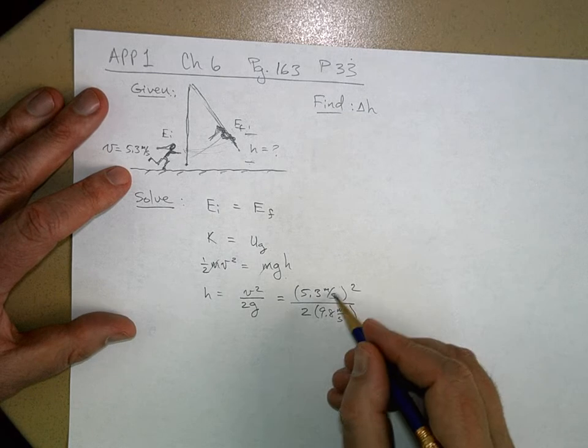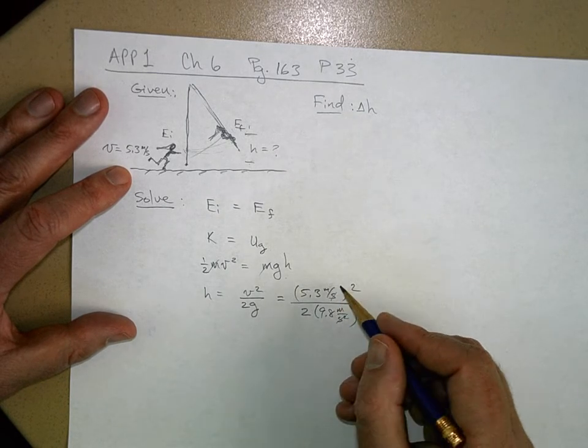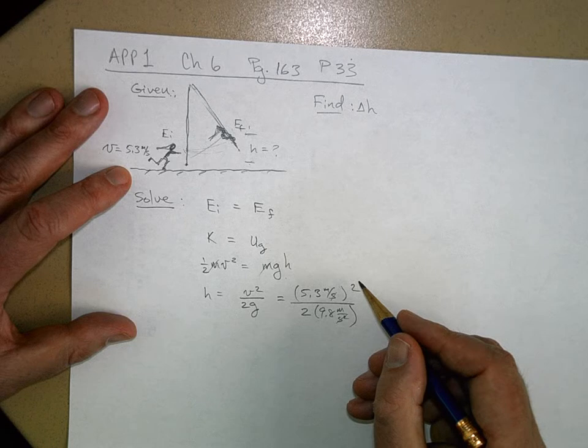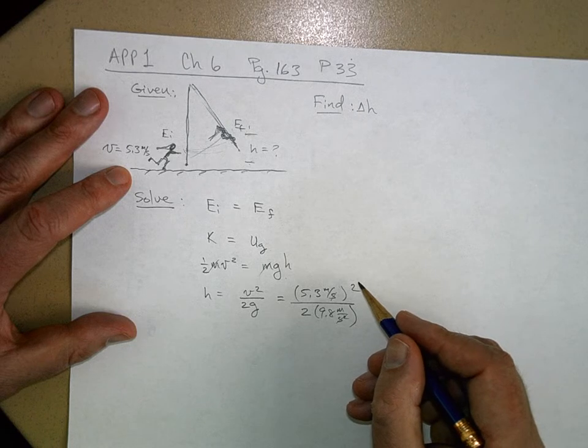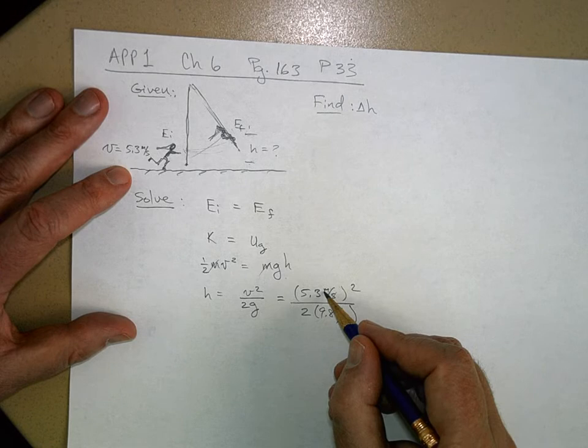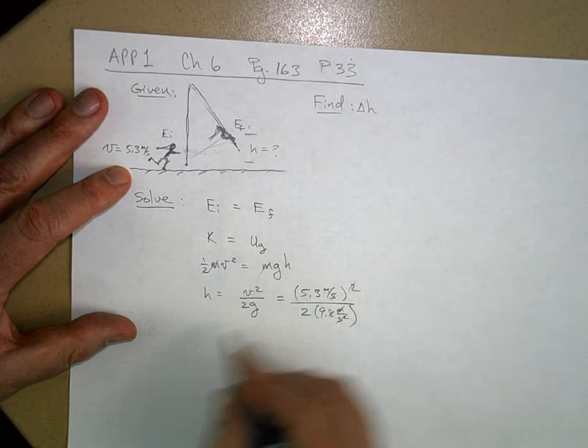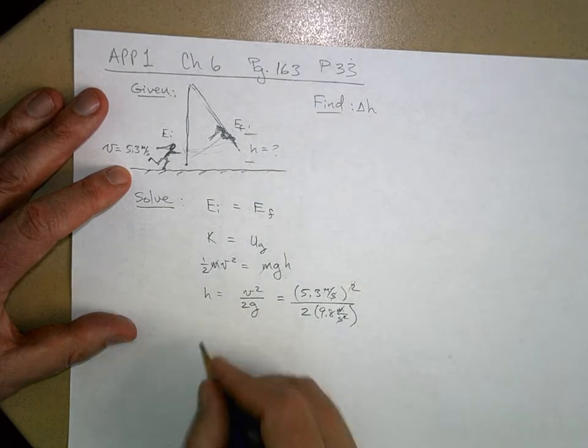5.3 meters per second squared over 2 times 9.8 meters per second squared. And notice the second squared cancels. Something isn't going to cancel. You're going to have a meter squared on the top here, but you only have a meters there on the bottom, so that's going to cancel. So anyway, we're going to get units of meters.